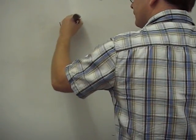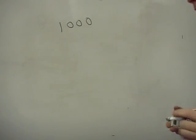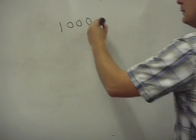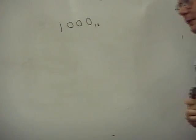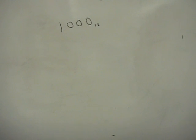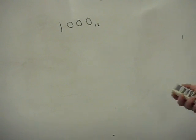Converting from decimal to hexadecimal. So if we have a number, let's start with 1,000. This is in base 10, and we want to convert this to hexadecimal. We can do it the same way that we convert decimal to binary, which is we take 1,000 and we divide it by 16.